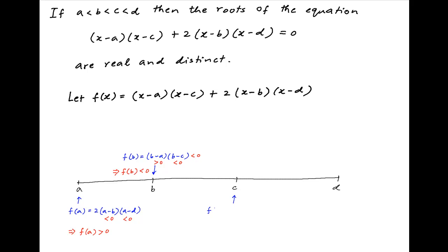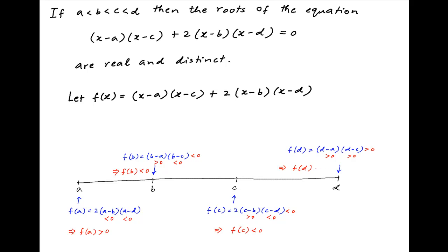At x equal to c, the function equals 2 times (c minus b)(c minus d). Since c minus b is positive and c minus d is negative, the value of f(c) is negative. At x equal to d, the function equals (d minus a)(d minus c). Both d minus a and d minus c are positive, so the value of f(d) is positive.